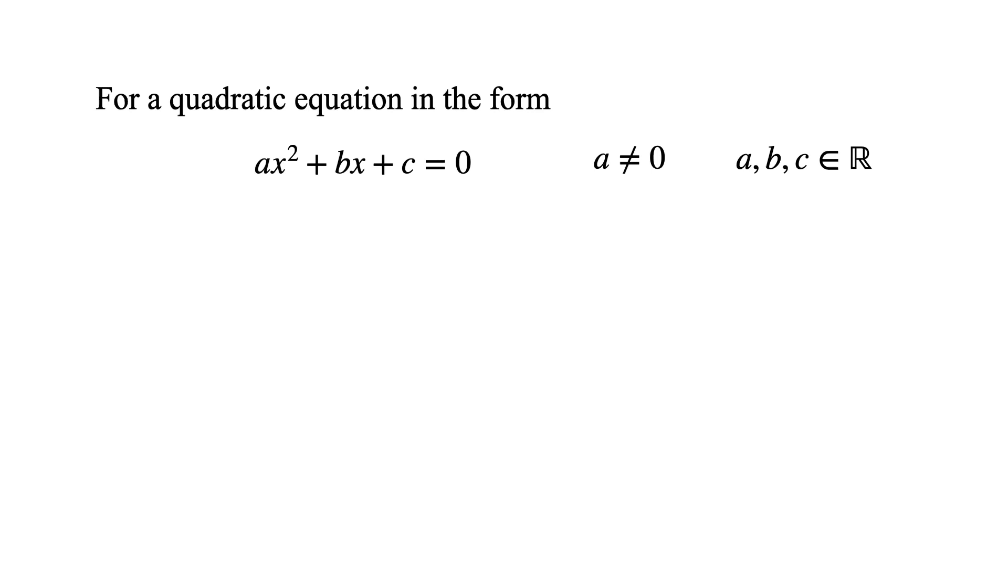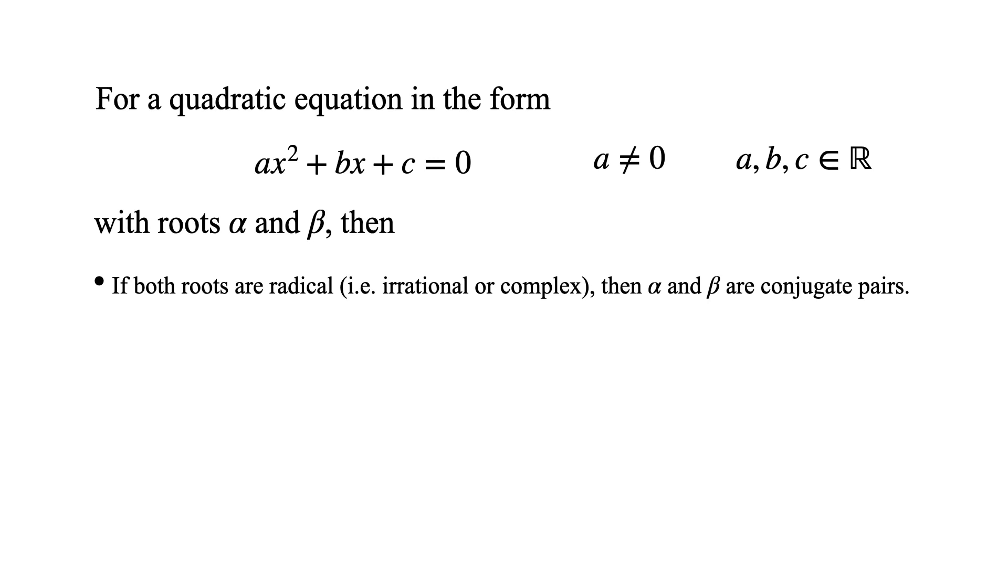Let ax squared plus bx plus c be a quadratic equation with real coefficients and a being non-zero. Suppose also that alpha and beta are the two roots, then we have if both roots are irrational or complex, then alpha and beta is a conjugate pair.